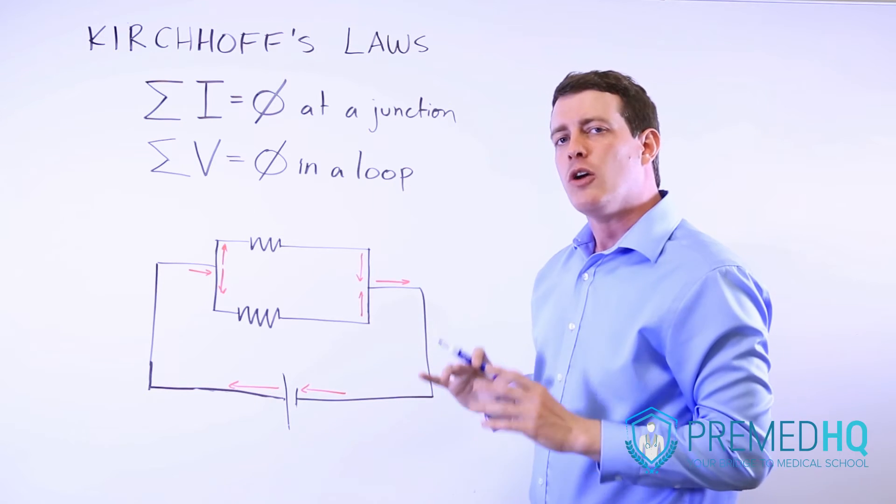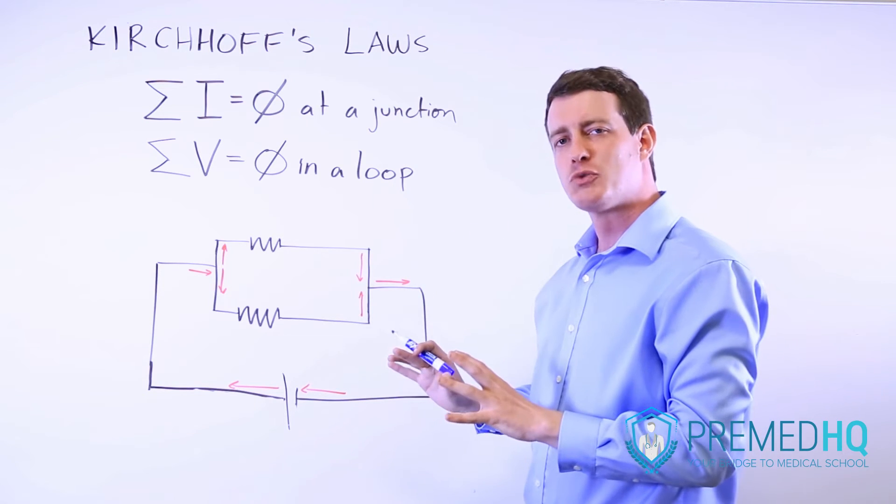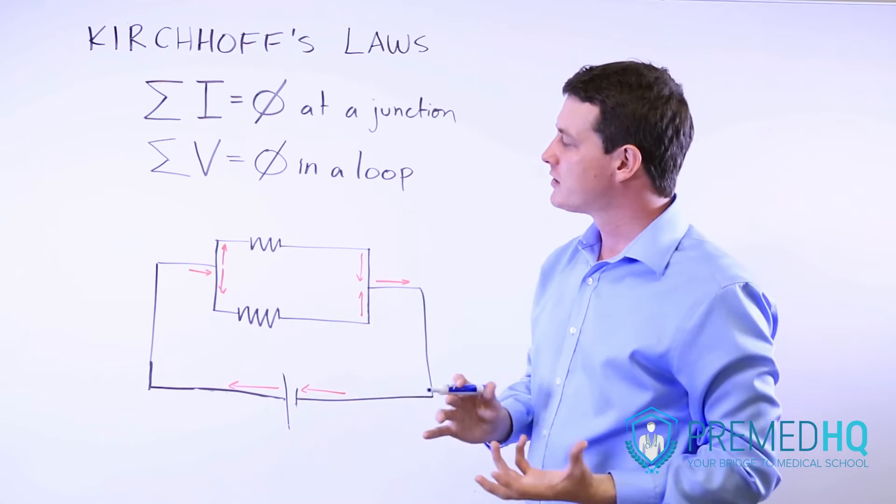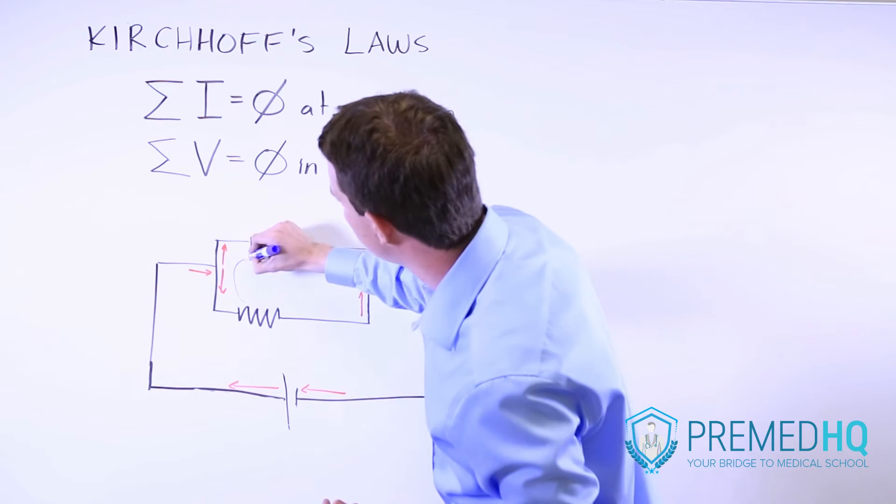If they're different however, we again apply Kirchhoff's rules in order to figure out what's going to happen. Notice that right here we could draw a loop like that.